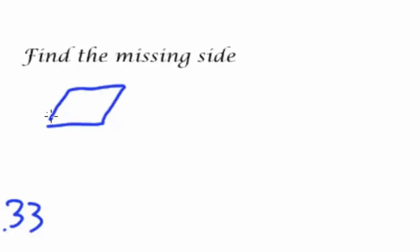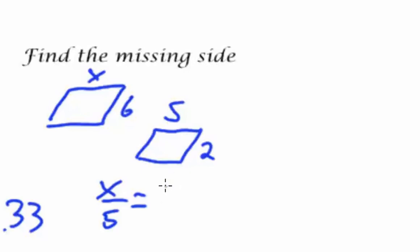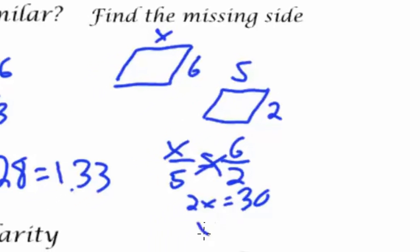So let's go back to another find the missing side problem. I have a parallelogram with sides x and 6, and I have a smaller parallelogram with sides 5 and 2. So as I carefully set up the problem, x over 5 will be equal to the other corresponding pair, 6 over 2. I cross multiply, x times 2 gives me 2x, and 6 times 5 gives me 30. Divide both sides by 2, and x gives me 15. So the big side of that big quadrilateral is 15.